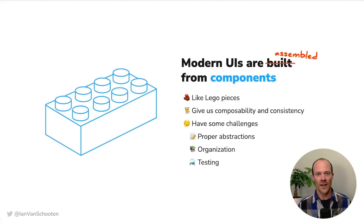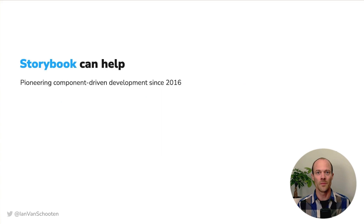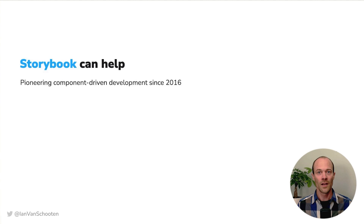And finally, testing. My Lego metaphor is breaking down now, but testing components is hard. This is where Storybook comes in. They've been one of the big players driving component-driven development for a long time. They're currently number 55 out of the highest starred repos on GitHub. The reason it's so popular is that it helps solve those problems I just mentioned when working with components.